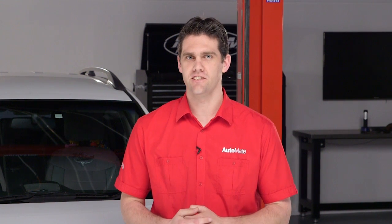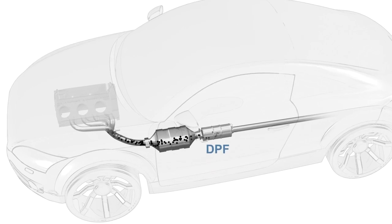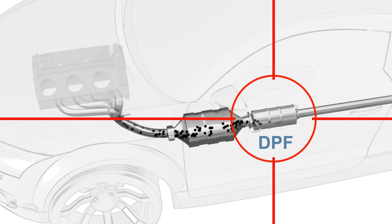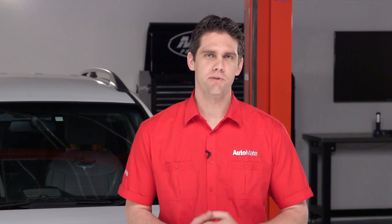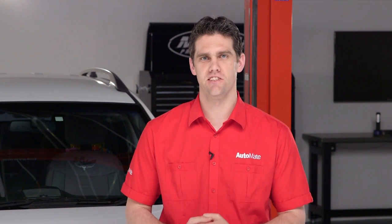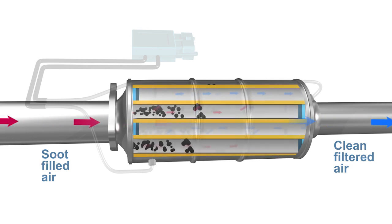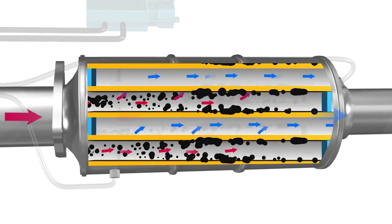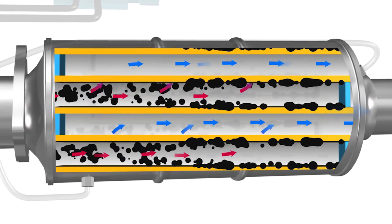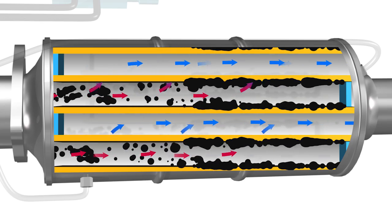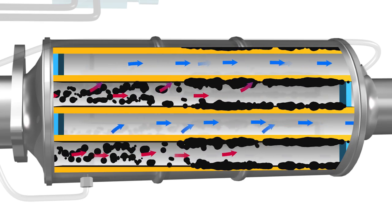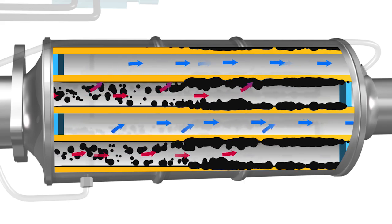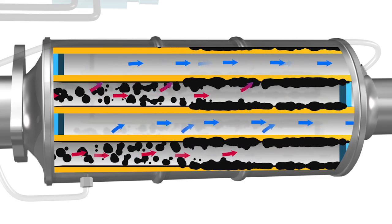Common rail diesel engines fitted with a DPF require a special low-wash oil. The purpose of the DPF is to trap the particulates created by all diesel engines, preventing them from entering the atmosphere. These particulates are extremely harmful to the respiratory system. The particulates are trapped by microscopic channels within the diesel particulate filter, and the soot that attaches to the walls of those channels is burned off regularly in a process called regeneration.